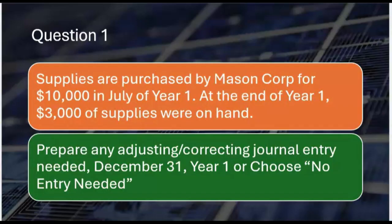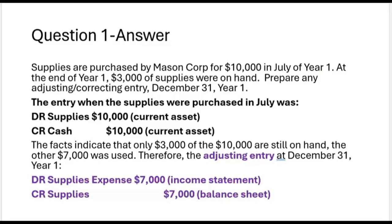Here's question 1. Supplies are purchased by Mason Corp for $10,000 in July of year 1. At the end of year 1, $3,000 of supplies were on hand. We know the supplies were purchased July of year 1, and when they were, the journal entry was a debit to supplies and credit to cash for the full amount of $10,000.